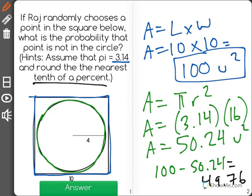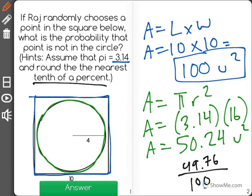49.76 is the amount of space that is not in the circle out of 100, the total area of the square. This is fortunate because when we're finding a percent, a percent is just a number out of 100. Well, we already have a number out of 100, it's right here, 49.76.